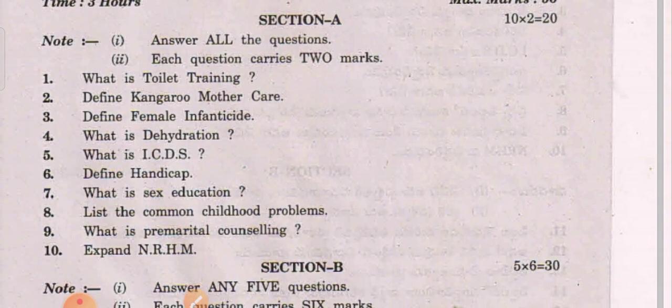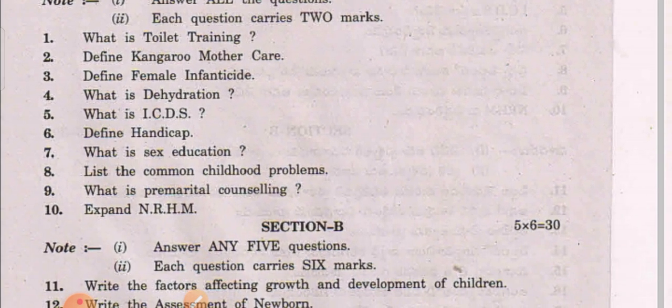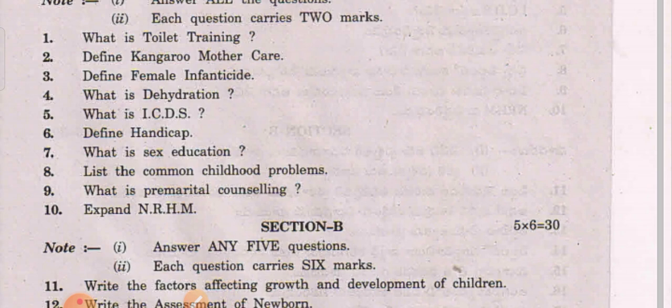Okay. The short answer questions are: define kangaroo mother care, what is toilet training, define female infanticide, what is dehydration, what is ICDS, define handicap, what is sex education, list the common childhood problems, what is pre-marital counseling, expand NRH.